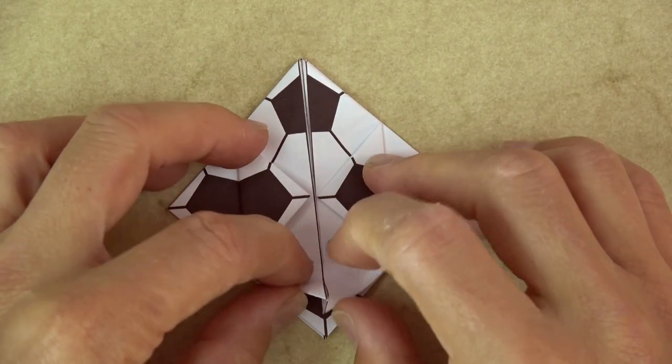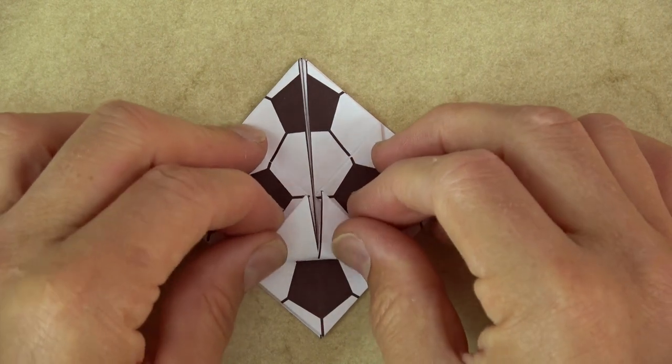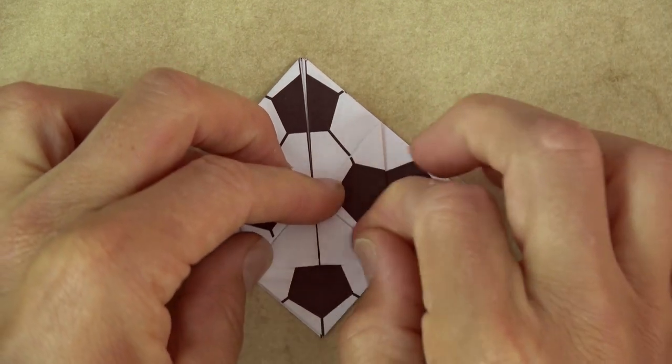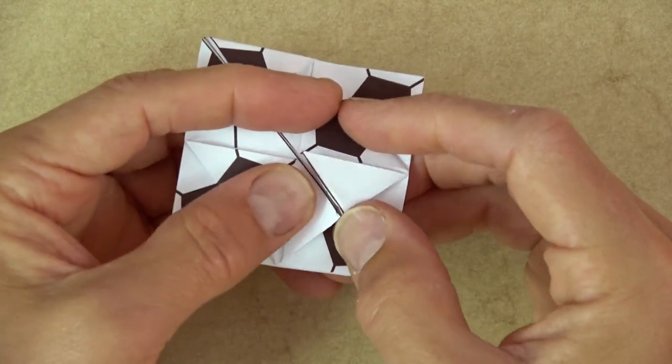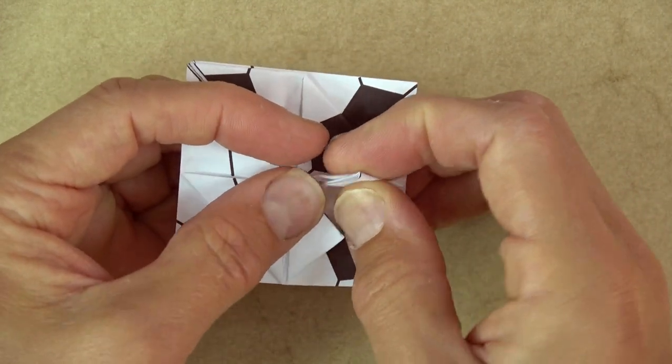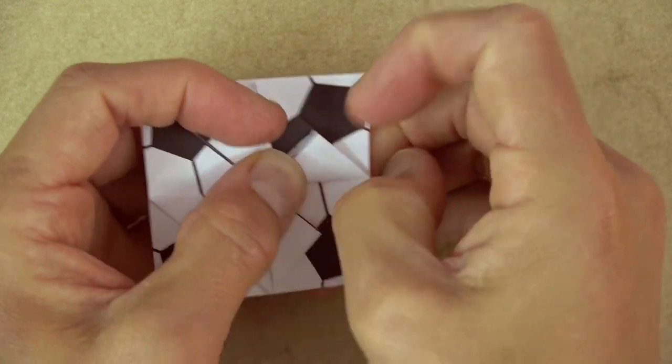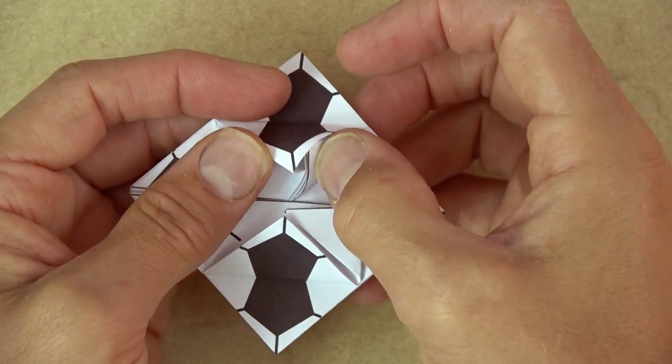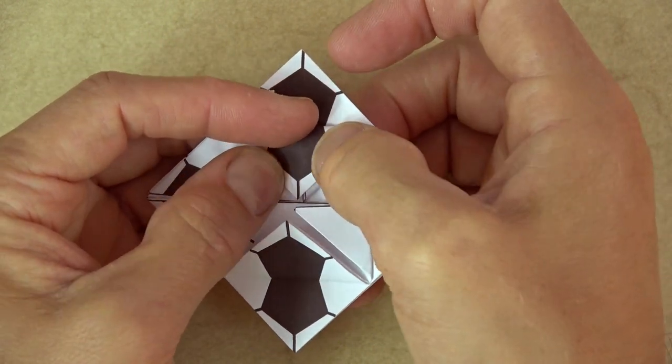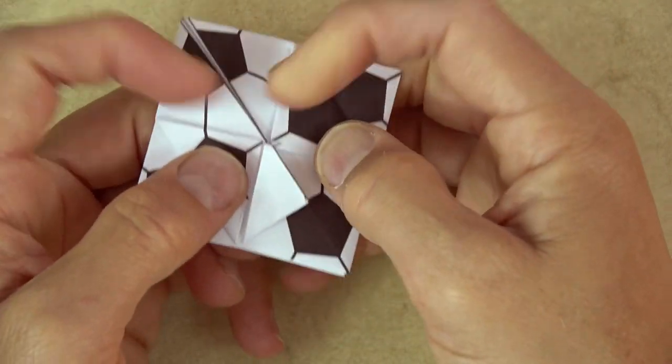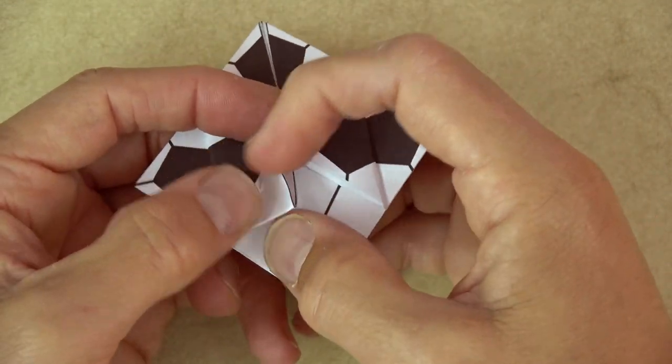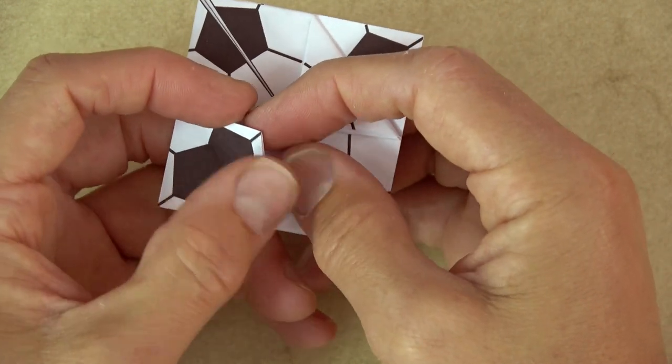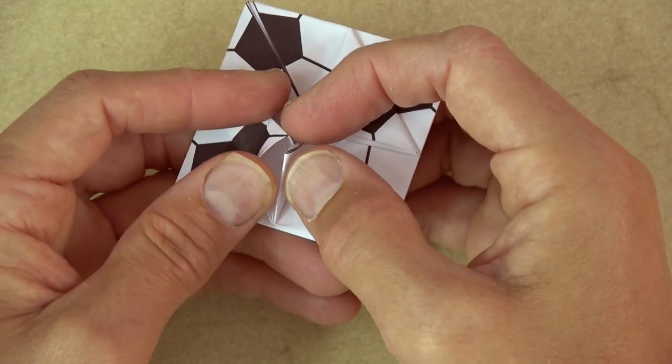And now fold these two flaps to the middle point. And fold this flap over like this. And unfold the flap and stick it into the pocket. And flatten like that. And repeat on this side. So fold it over the flap. Unfold. Open the pocket. And stick it inside.